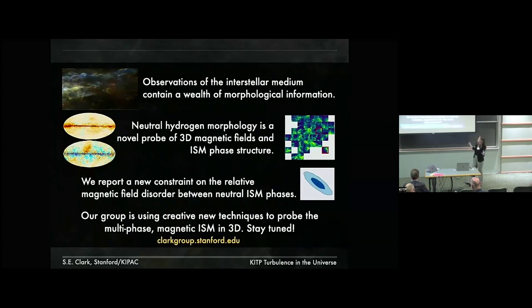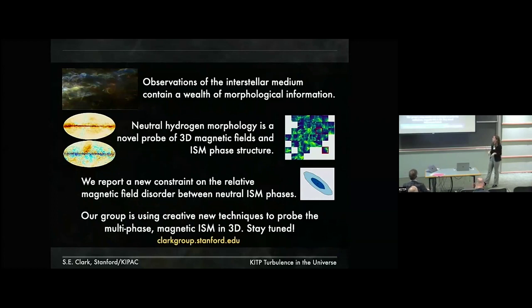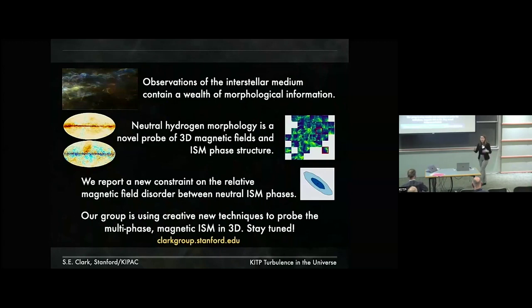To conclude: observations of the ISM have a wealth of morphological information if we can just be clever about how to get it out. We can learn about the structure of three-dimensional magnetic fields and about the phase structure of the ISM. We've recently put some of this together to have a new constraint on the magnetic field disorder between phases of the neutral ISM. Very much looking forward to being here with you for a few weeks. Thank you very much.